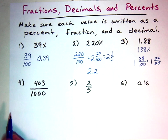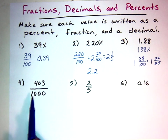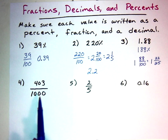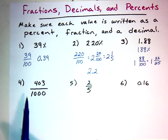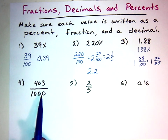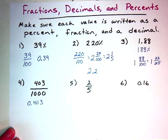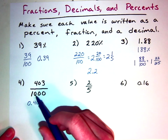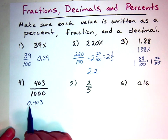For number four, I've got 403 over 1,000. When the denominator is not 100, I'm probably going to turn it into a decimal first. So 403 divided by 1,000 gives the decimal. Using the power of 10 rule, 1,000 is 10 to the third power, so dividing by it moves the decimal three places to the left, giving us 0.403.